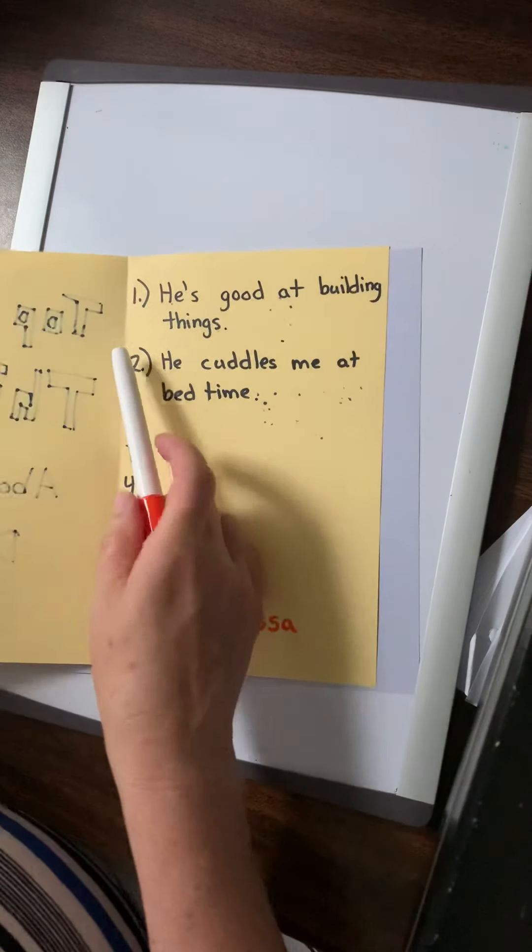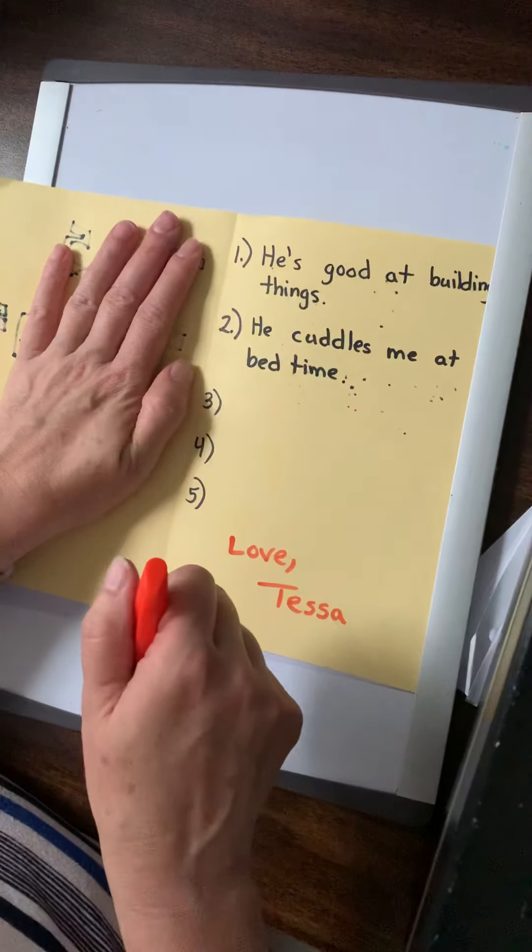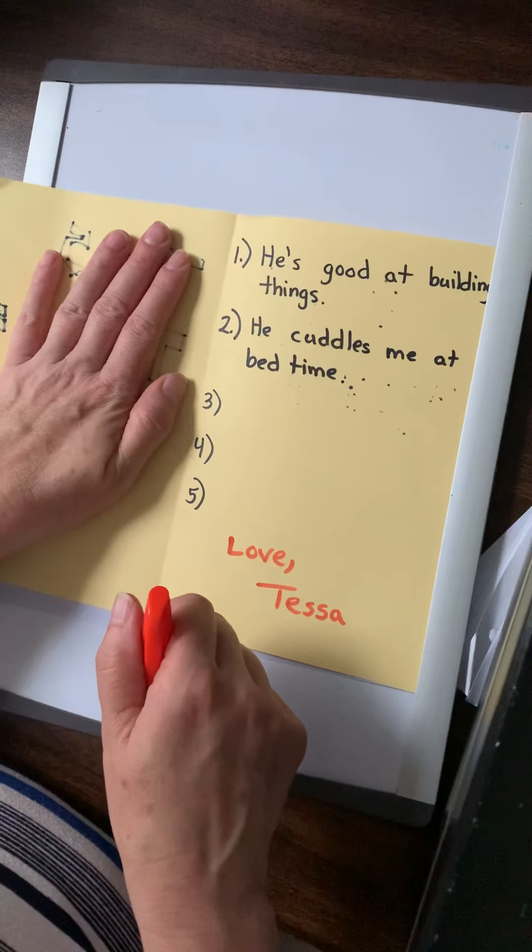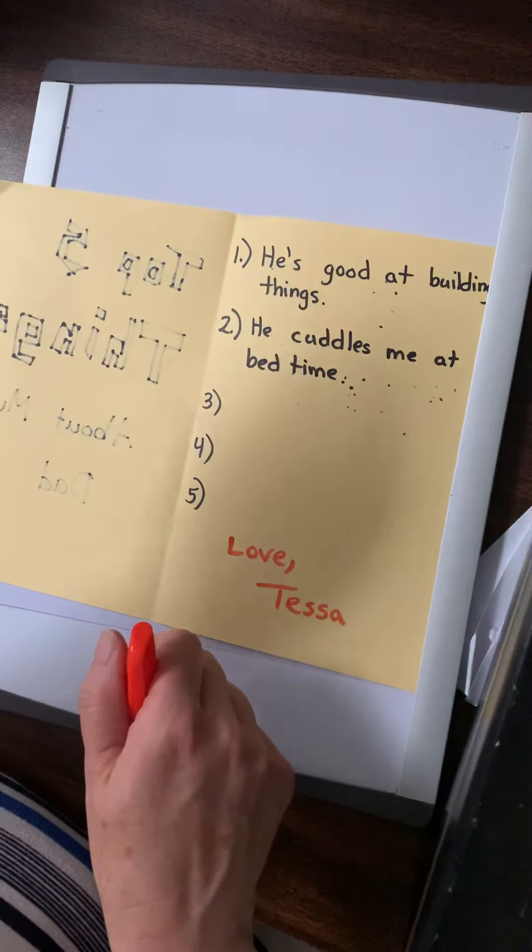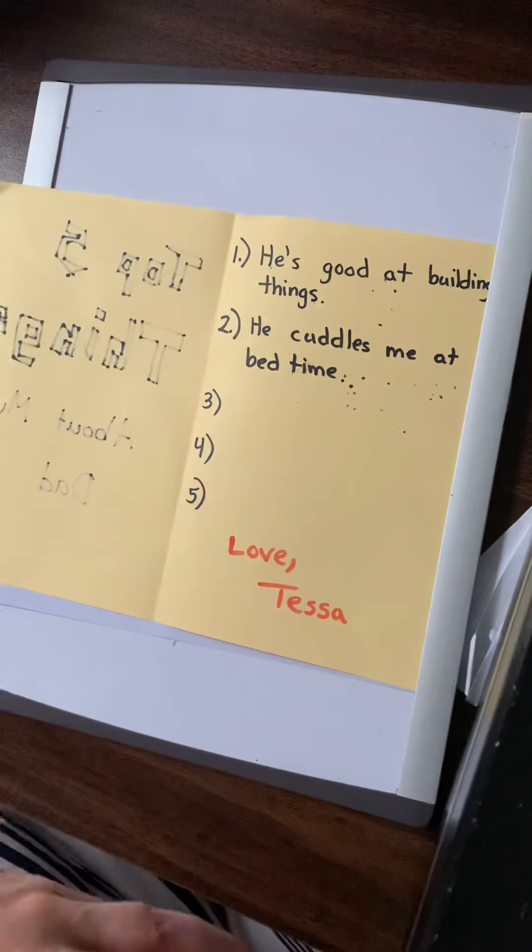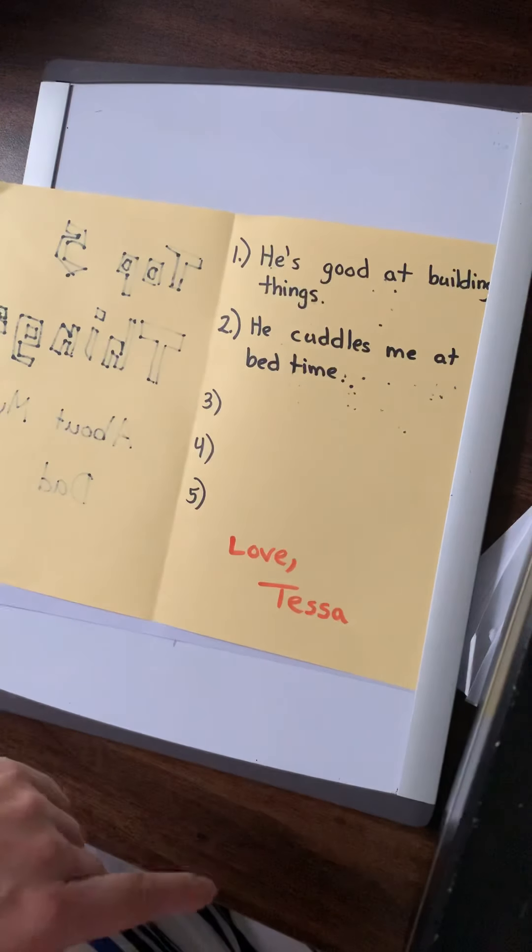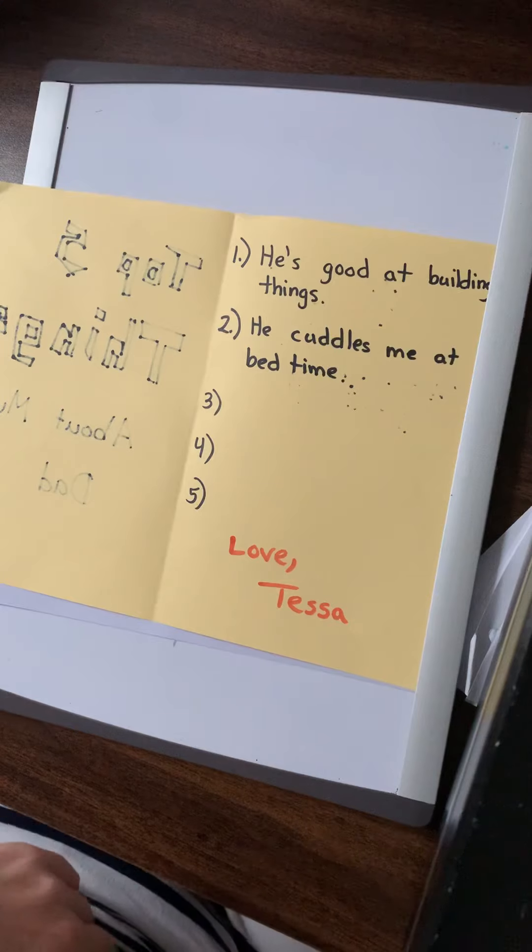And then in here I mean I used a sharpie so it kind of went through the card. You're not going to be using a sharpie. So you should be able to draw a picture here is what I'm thinking. Decorate it. Make it look awesome. Trace it over with marker after writing out your sentences.